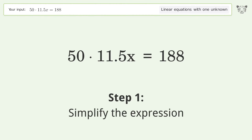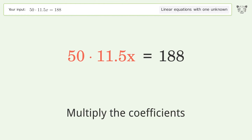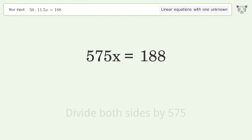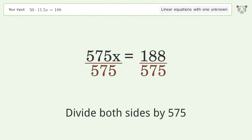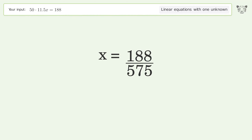Simplify the expression by multiplying the coefficients. Isolate the x by dividing both sides by 575. Simplify the fraction, and so the final result is x equals 188 over 575.